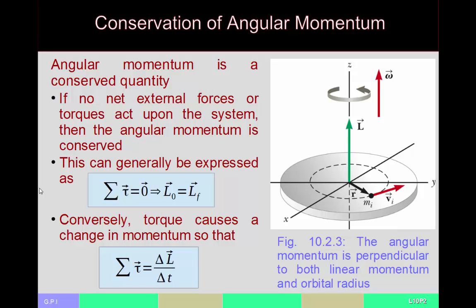The angular momentum itself is actually a conserved quantity. This means that if you don't have any external forces or torques acting upon the system, then you will have the same angular momentum at one point in time as at the next. It is the torque which is going to change the angular momentum. If there is no net torque on the system, then the initial angular momentum equals the final angular momentum. If you do have a net torque, then the net torque equals the change in angular momentum per unit time. So long as no torque is placed upon a spinning disk, the disk will retain the same angular momentum regardless of what else happens.